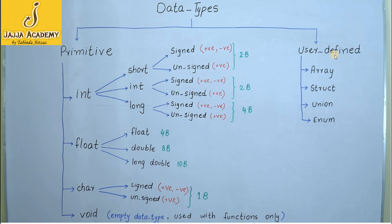Now let us discuss the user-defined data types. The user-defined data types are array, struct, union, and enum. All these data types are separate concepts with separate chapters dedicated to each. We will discuss them in later lectures. In this lecture, we shall focus on the primitive data types only.